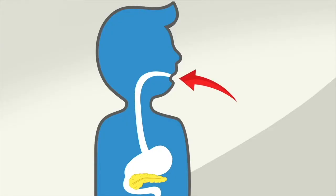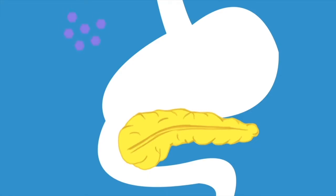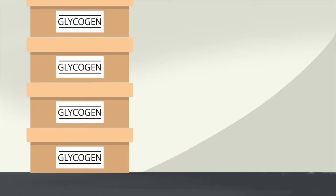When we eat, our pancreas releases insulin that helps to store extra glucose that comes from food as glycogen in the liver, kidney, and muscles. Extra energy is also stored in body as fat.